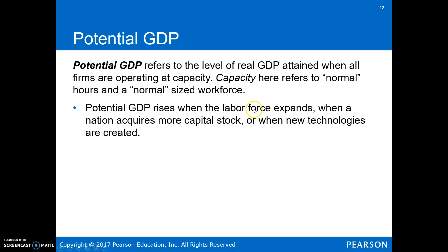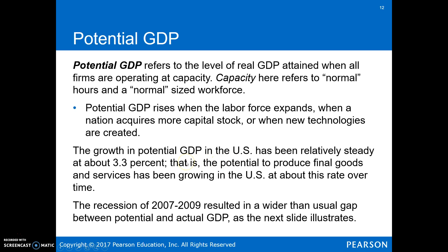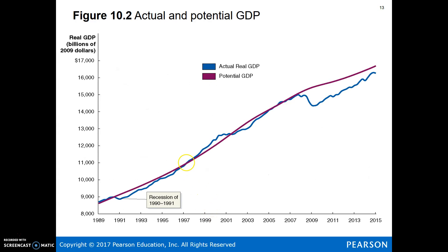We want to distinguish two kinds of GDP. Potential GDP is what would be possible if firms and workers were operating at normal capacity; it increases as the labor force expands, capital stock increases, or new technologies are created. Potential GDP in the U.S. has grown at about 3.3% per year. Actual GDP is what actually happens. During a recession, you'll see a gap between potential and actual GDP, and the growth rate of potential GDP can also slow during a recession.